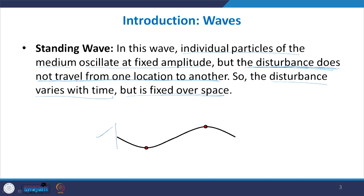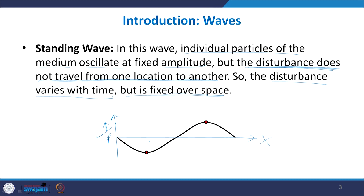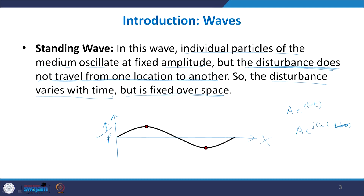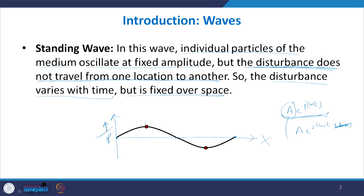Here, the x-axis represents space and the vertical axis represents pressure. Individual particles at different x locations each perform a sinusoidal motion with respect to time, but do not vary with respect to space. At every location there is some motion, and the amplitude of that motion depends on the location — for example, at one location you have maximum amplitude and at another you have zero amplitude. The amplitude itself is a function of space.